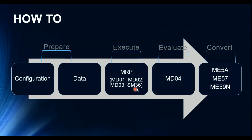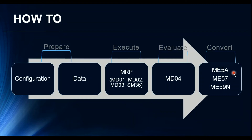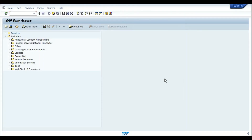Once MRP has been executed, we go to MD04 to evaluate the results for the material. MD04 is useful when planning a few materials and you want to evaluate them one by one in more detail. Alternatively, you can use standard reports like ME2M and so on to evaluate the generated purchase requisitions. Next comes the conversion of purchase requisitions into purchase orders using transactions ME5A, ME57, or ME59, depending on whether you need mass or single conversion.